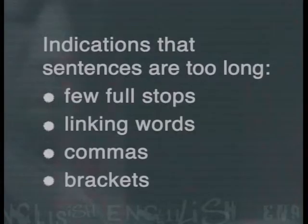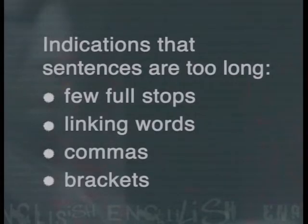It might be better to start a new sentence afresh. The final indication to look out for is brackets. When you include extra information in brackets, always consider whether it's appropriately placed or whether it should actually be in a new sentence. Let's quickly recap the indications that your sentence might be too long: be on the lookout for few full stops, linking words or conjunctions, commas, and brackets. Remember, we're learning about communicating clearly, and it's important that your sentences are of the appropriate length.